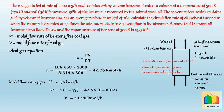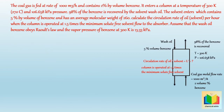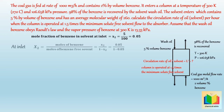Now let's calculate X2. As given, the inlet solvent contains 5% by volume benzene, hence the mole fraction of benzene in the inlet solvent, x2, equals 0.05. The inlet mole ratio X2 is calculated as moles of benzene divided by moles of benzene-free solvent, giving X2 equal to 0.0526.